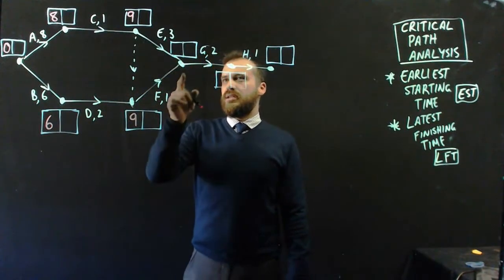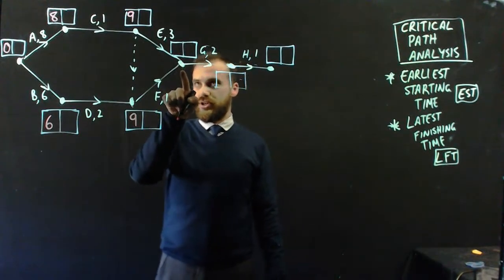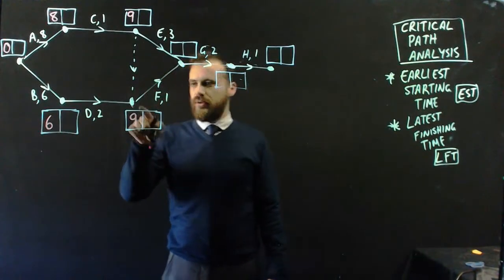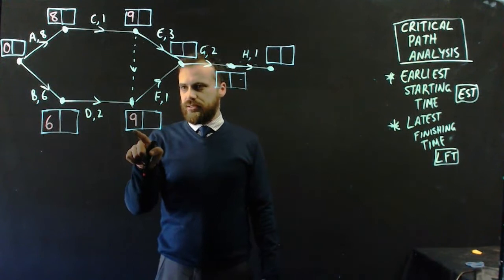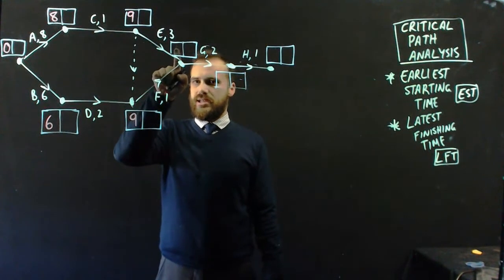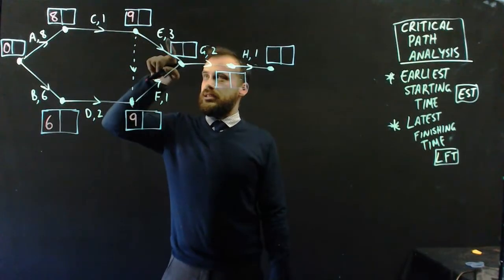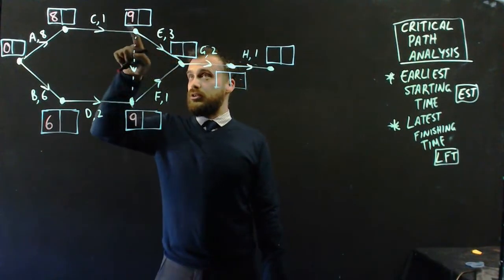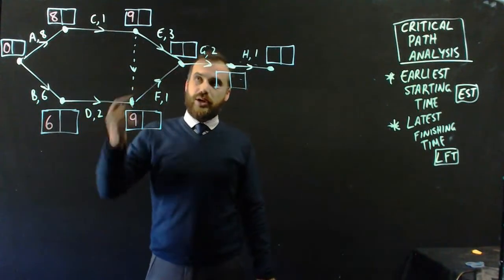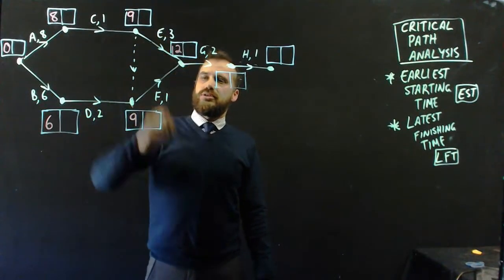Alright, let's look at this one here. Now G can't start until we reach this dot. And we haven't reached this dot until E has happened and F has happened. So we need to consider both. F starts after nine hours. Nine plus one is ten. So I might write ten in here. But E starts after nine hours, and E takes three hours, and nine plus three is twelve. The larger of those two numbers, ten and twelve, is twelve. So I can't start G until the last thing has finished. Twelve hours.